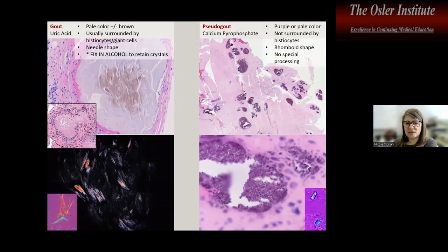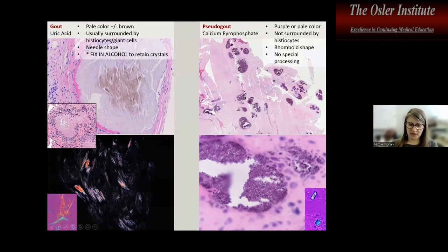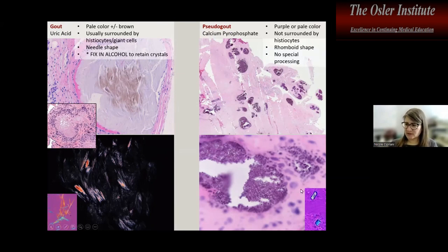In joints, crystal deposition includes gout and pseudogout. Gout crystals are needle-shaped uric acid crystals often surrounded by histiocytes and giant cells. Pseudogout crystals are rhomboid-shaped, often without histiocytes and giant cells.